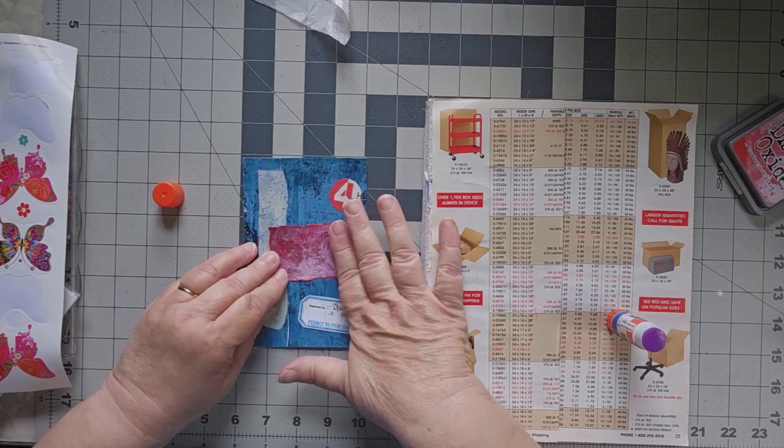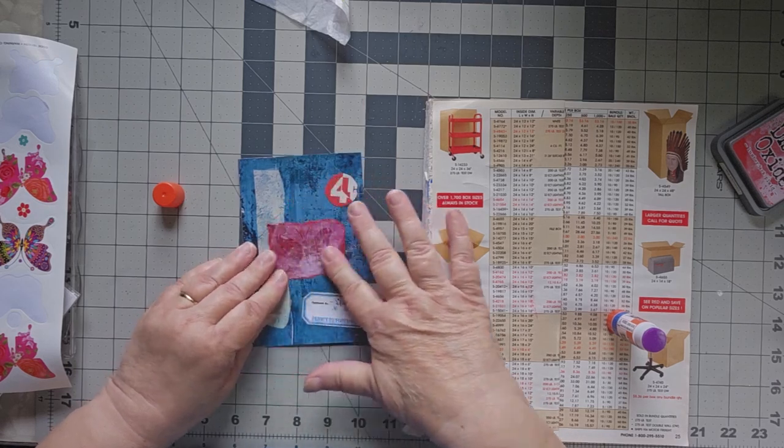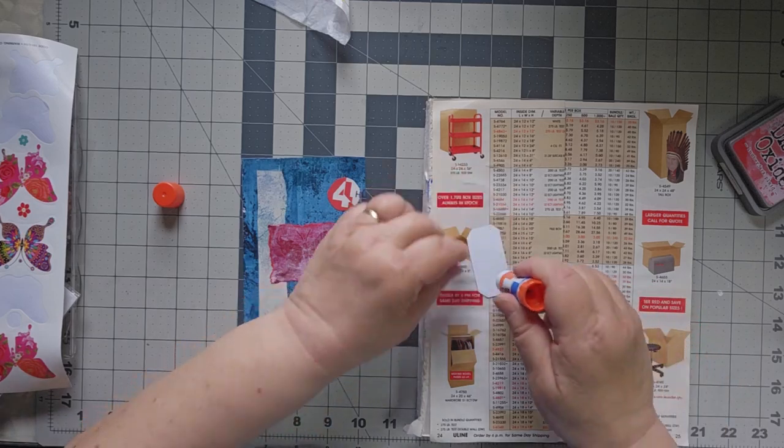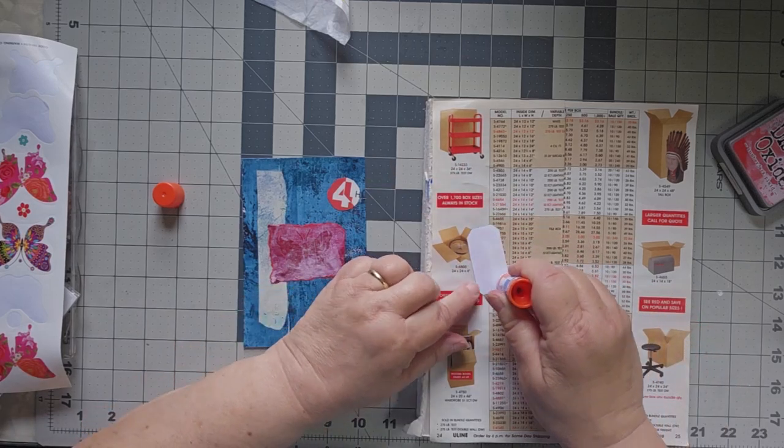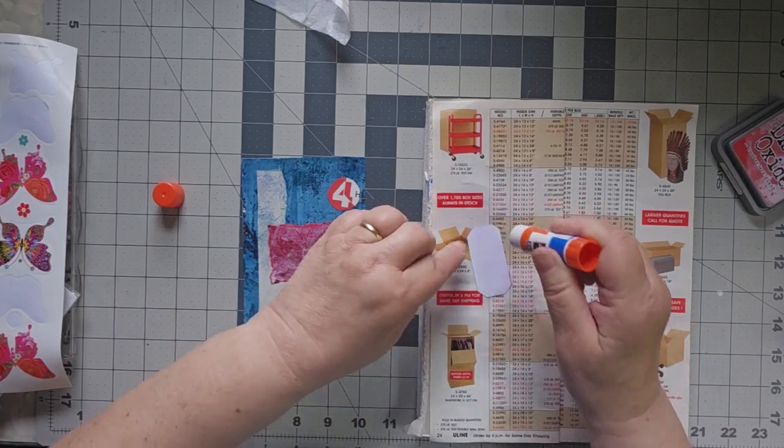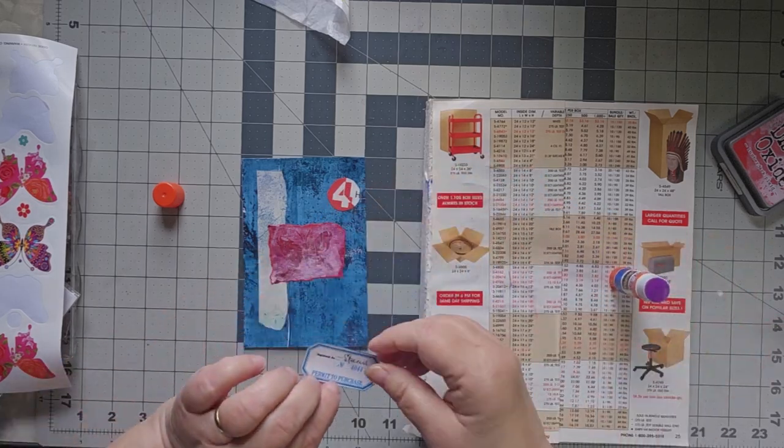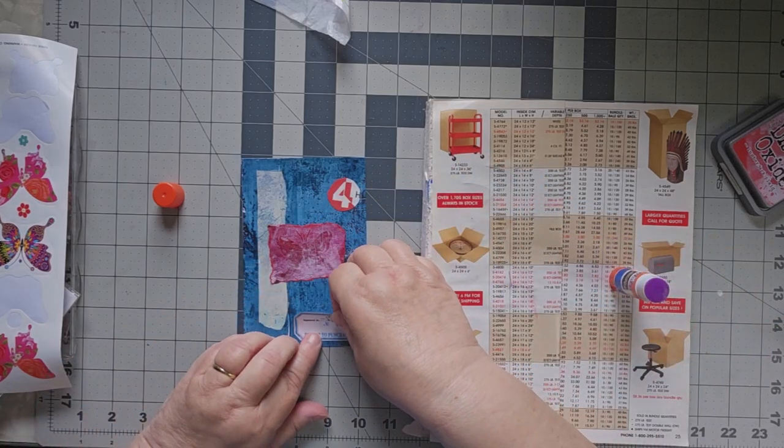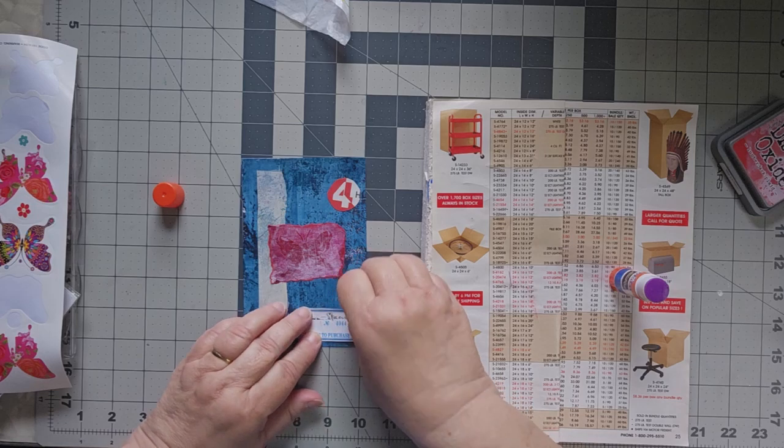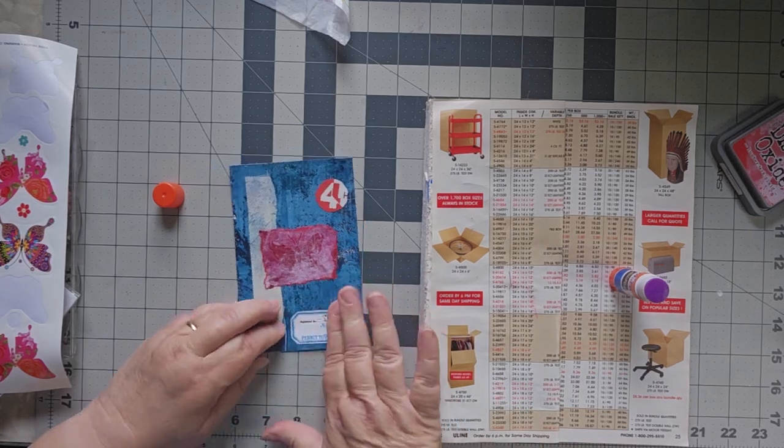We'll put our butterfly right here as our focal point. We have four fours, and that is serendipitous. I did three threes yesterday, four fours today. Don't worry, I'm not going to be doing 31 31s. This is just kind of the way it worked out.